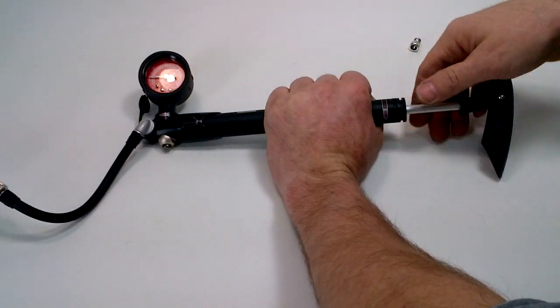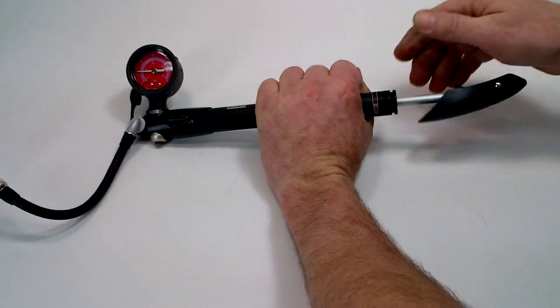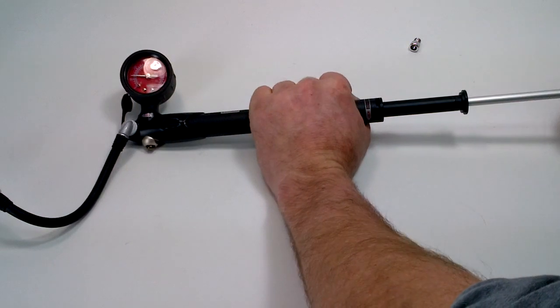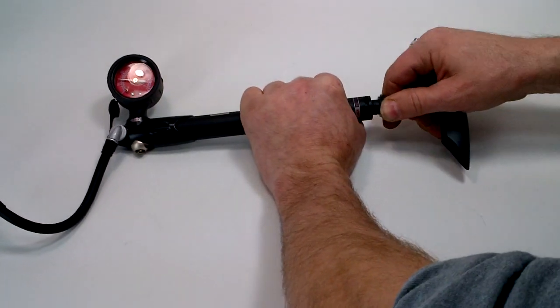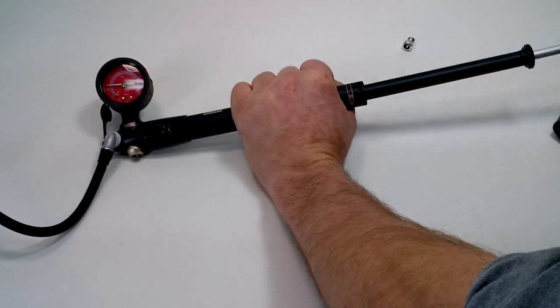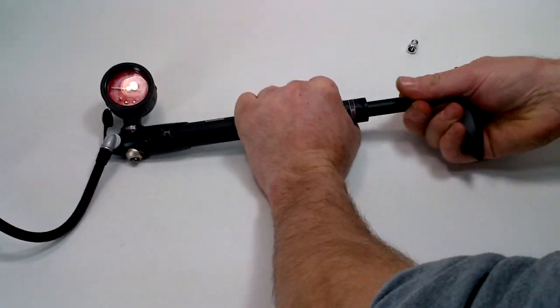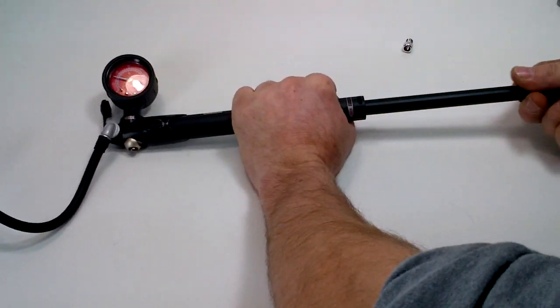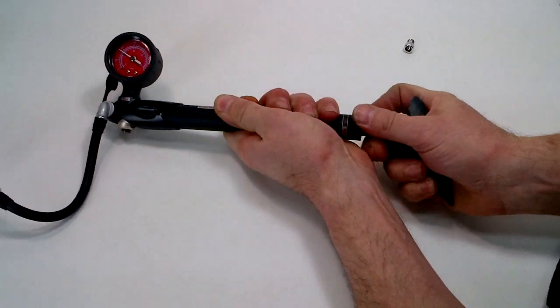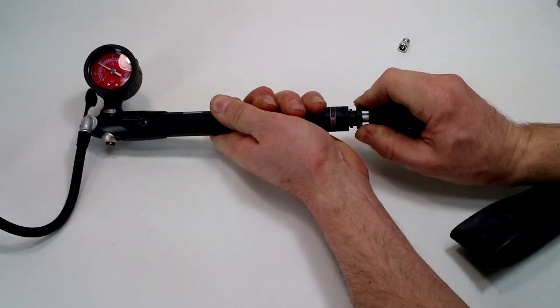To get a little bit of volume pumped up, I'm going to go ahead and unlock the bigger cylinder. The bigger cylinder you can use a couple of times and it'll help to get the volume up a little bit. There's that 75 or so. There's 100 PSI right there.